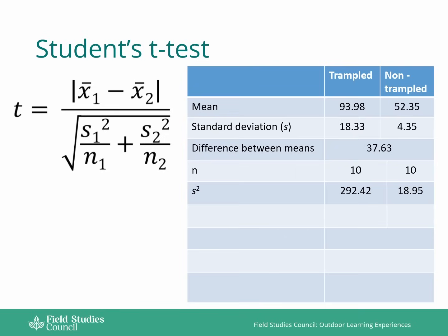Here we've got the standard deviation and we've squared it. So we're just building up the information at the bottom of our equation. We've squared the standard deviation of site one and that of site two. The next step is we're going to divide the squared standard deviation by the n value. So for the trampled site, it's going to be 292.42 divided by 10 and for the non-trampled site, 18.95 divided by 10.